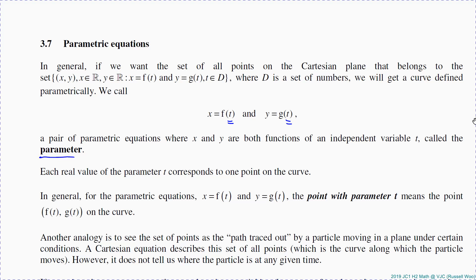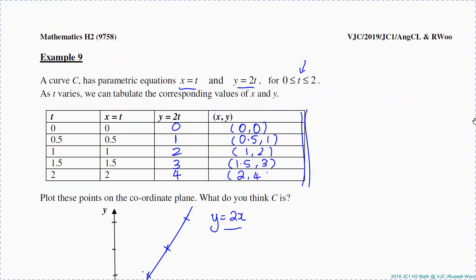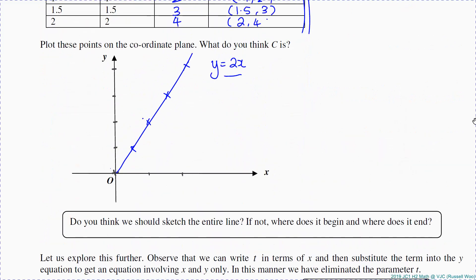Does it need to be always t? No, it can be theta, it can be s, doesn't matter. But in a lot of cases we use t because t represents time for physics. Now this analogy is to see the path traced, so now it makes sense.